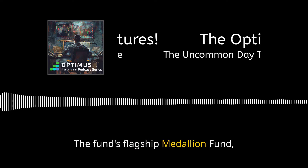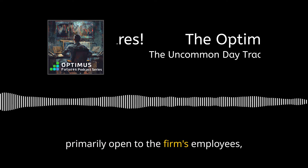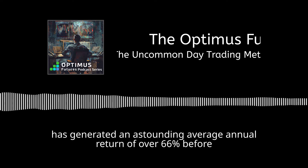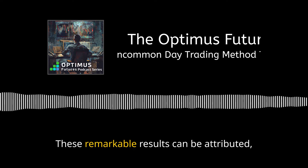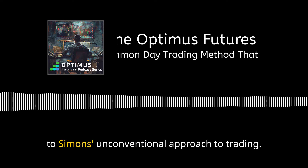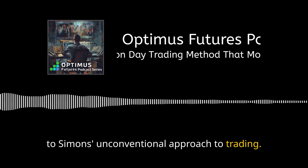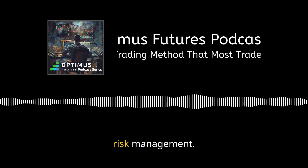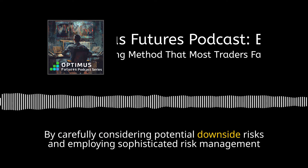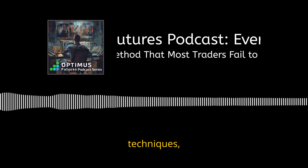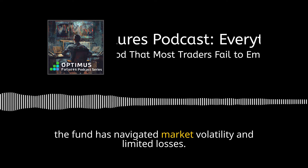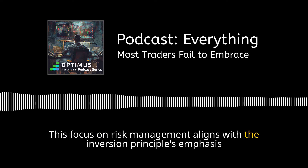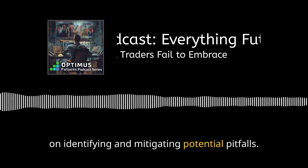The fund's flagship Medallion Fund, primarily open to the firm's employees, has generated an astounding average annual return of over 66% before fees since 1988. These remarkable results can be attributed in part to Simons' unconventional approach to trading. One key aspect of Renaissance Technologies' success is its emphasis on risk management. By carefully considering potential downside risks and employing sophisticated risk management techniques, the fund has navigated market volatility and limited losses. This focus on risk management aligns with the inversion principle's emphasis on identifying and mitigating potential pitfalls.